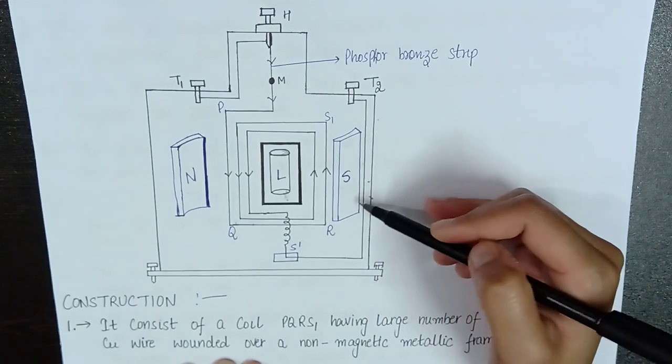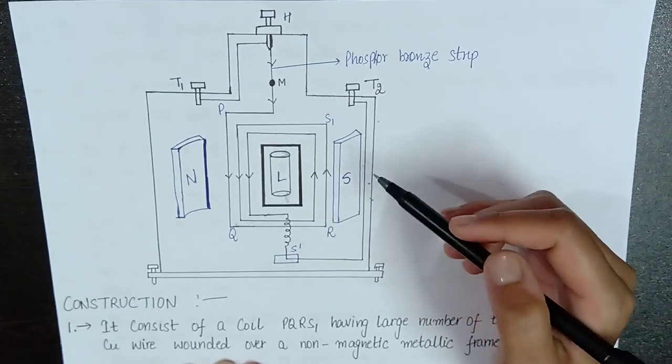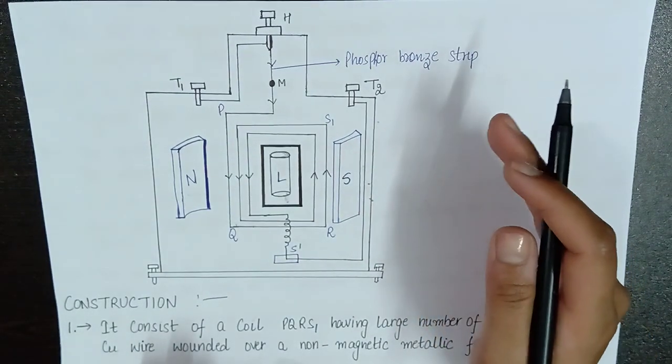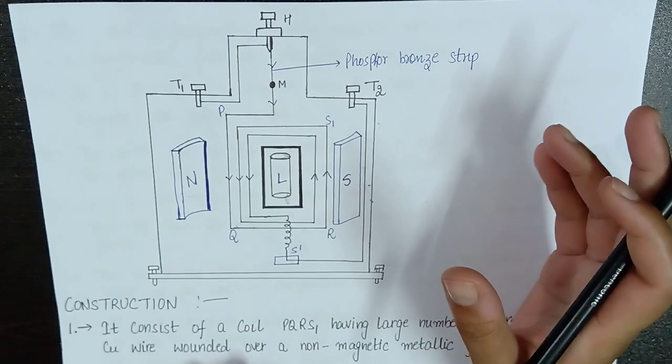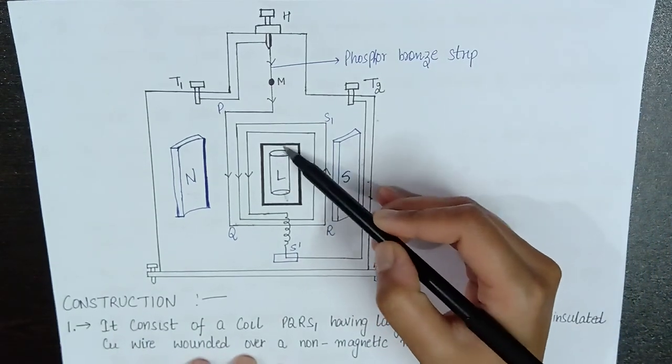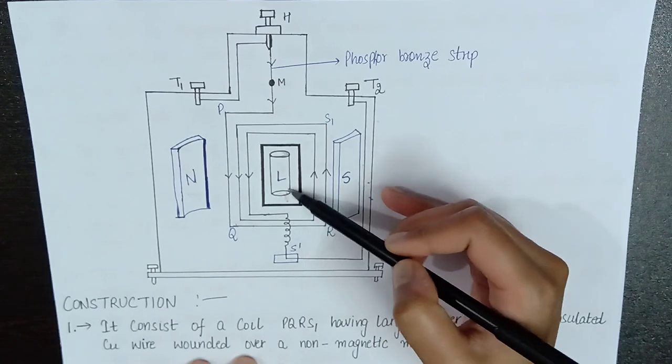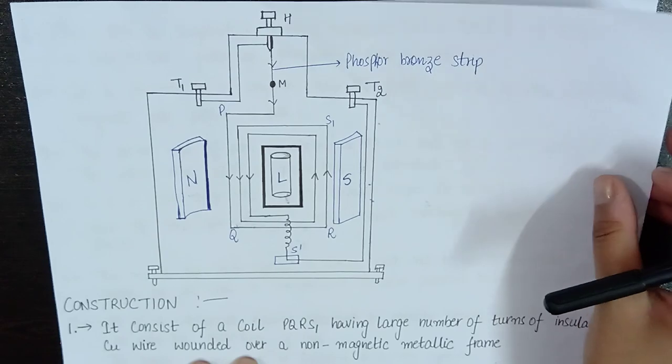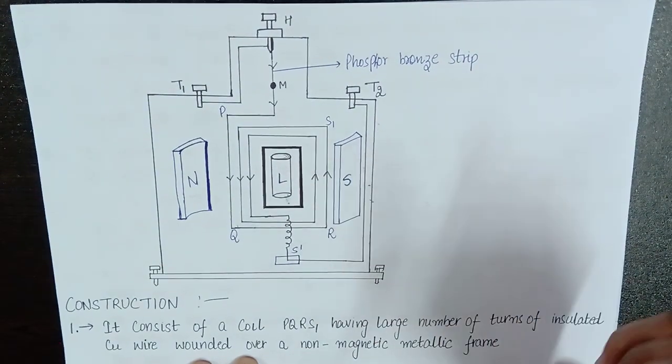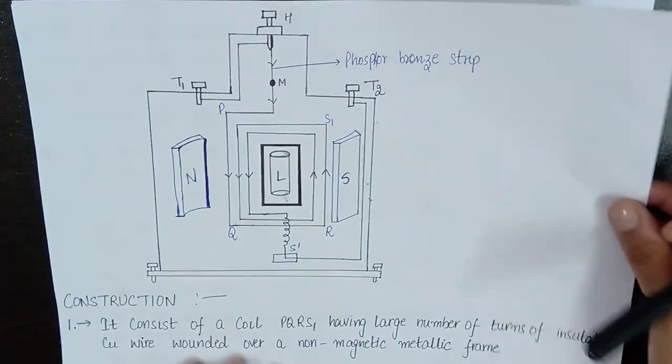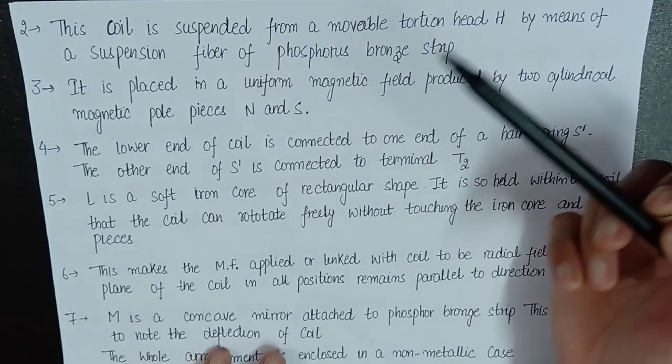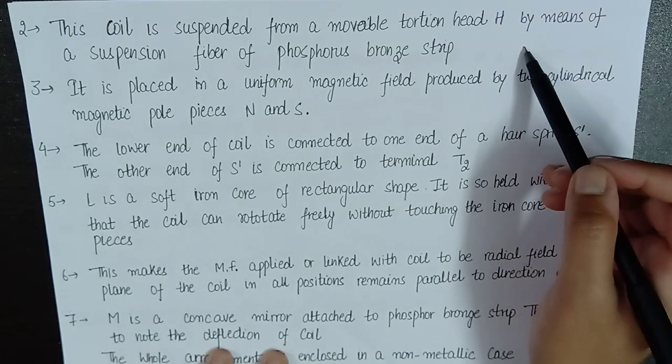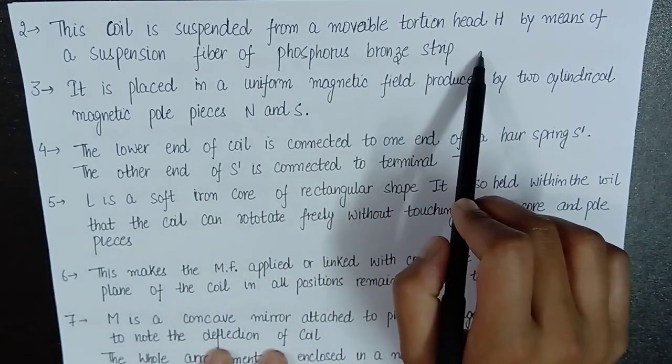Which is placed in such a way that the magnetic field is parallel to the plane drawn from that of the coil. That is the magnetic field which is radial magnetic field. So this L is a soft iron core and it is placed in such a way that there should be no contact between the coil and that of the soft iron core.